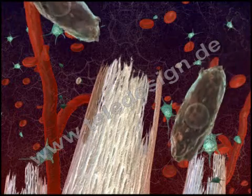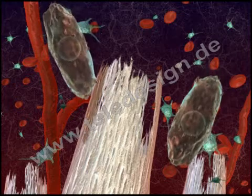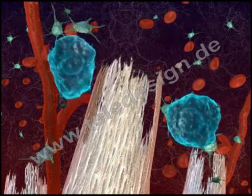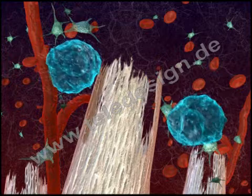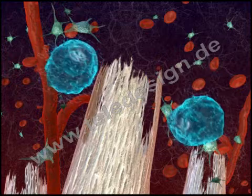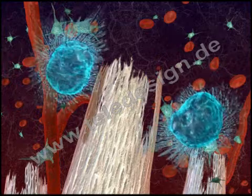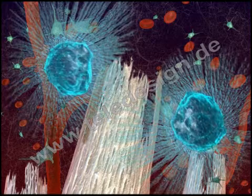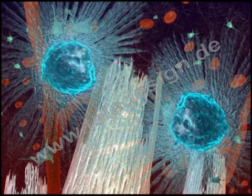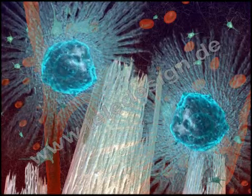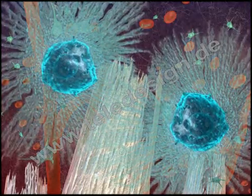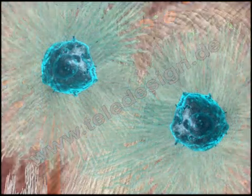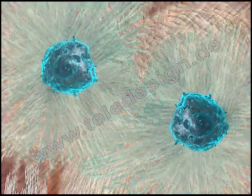Mesenchymal stem cells and osteoprogenitor cells proliferate and differentiate into osteoblasts. In the second repair stage of the healing process, osteoblasts start to deposit a bone-specific extracellular matrix, mainly collagen type 1. Collagen is mineralized, forming immature woven bone.